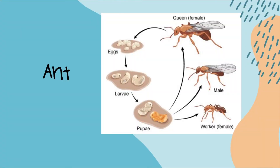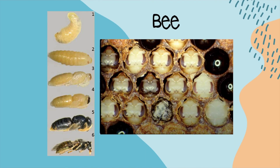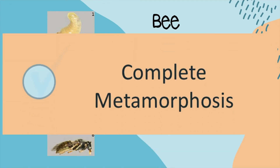Now an ant. Egg, larva, pupa, adult. Did you say complete metamorphosis? If you did, you are correct. Great job. Now a bee. Is that incomplete or complete metamorphosis? Do I see a chrysalis? Do I see a nymph stage? Complete metamorphosis — you are correct.